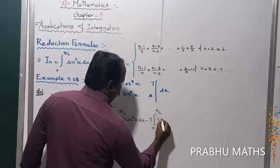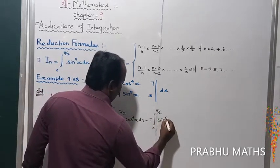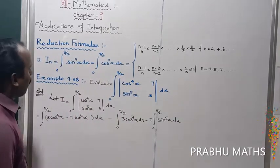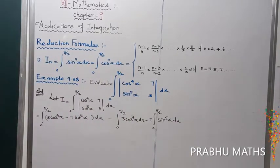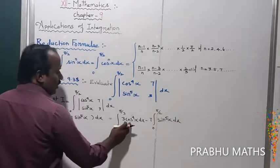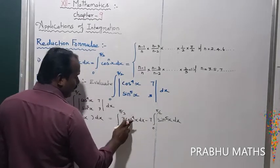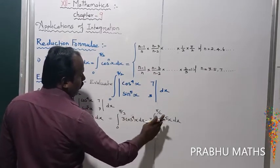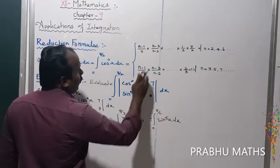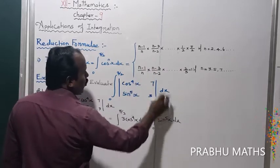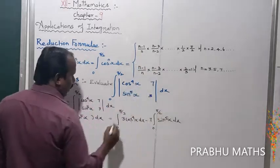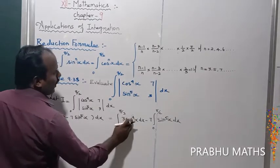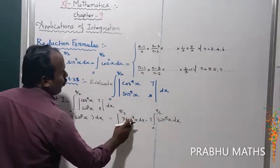By using the reduction formula for sin and cos: the even number formula applies to the first integral, and the odd number formula applies to the second integral. Now apply the first formula. For cos⁴x, n is equal to 4, which is an even number, so we use the first (even) formula.